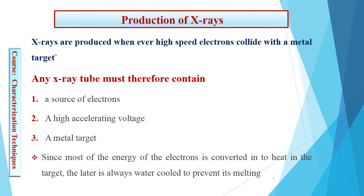Because when high-energy electrons continuously fall on the surface of the target, the target may melt and the emission of X-rays may not be proper. So it is very important to put a water-cooled assembly around the target to prevent its melting and to maintain its temperature.